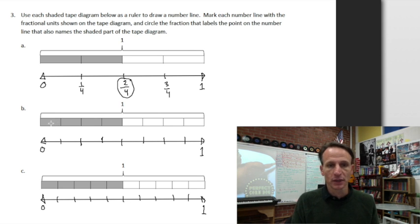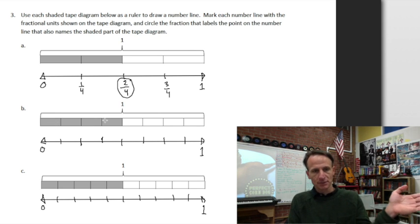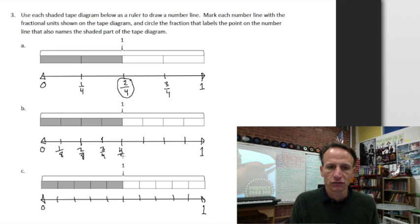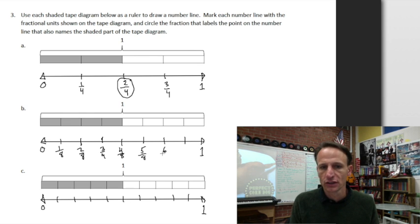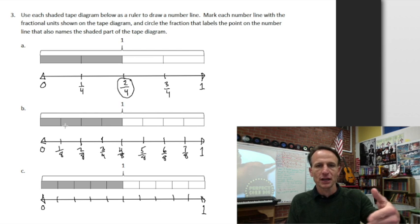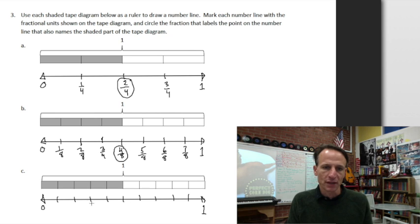Here we can just skip-count: four and four is eight, so we're talking about eighths. That's one-eighth, two-eighths, three-eighths, four-eighths, five-eighths, six-eighths, seven-eighths. And of course one whole would be eight-eighths. What's the actual fraction represented by the tape diagram? It's four out of eight — four-eighths — so I circle that.